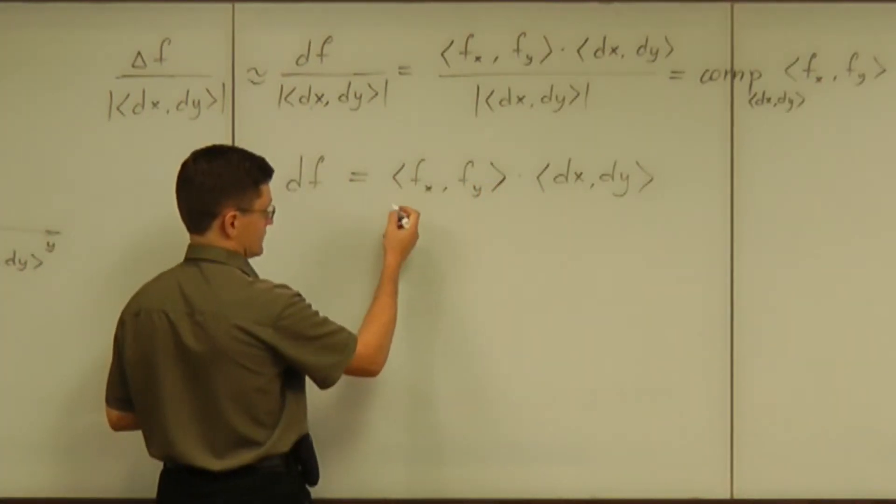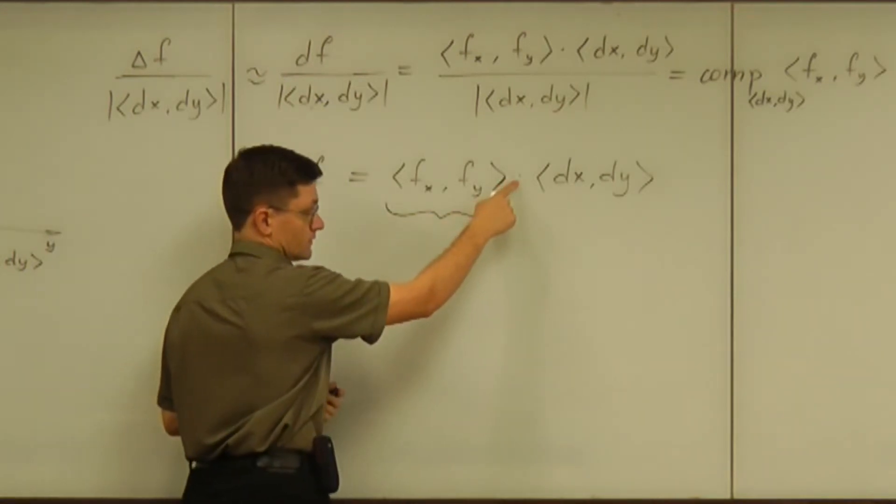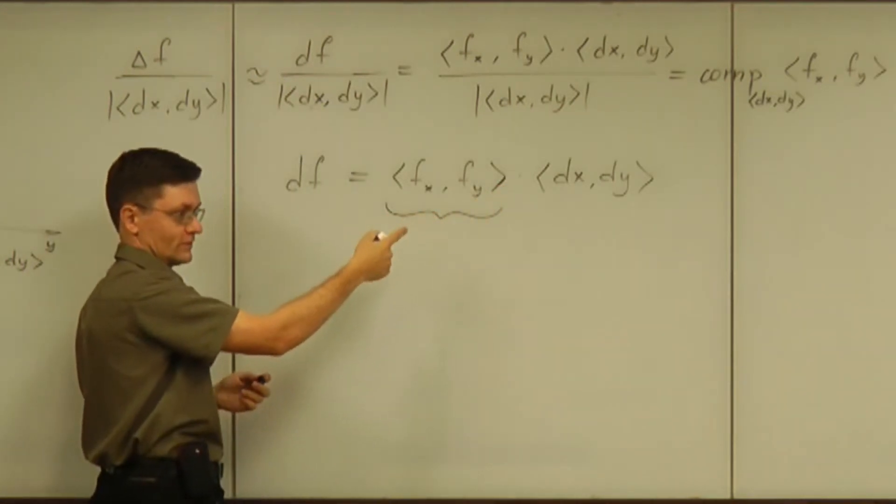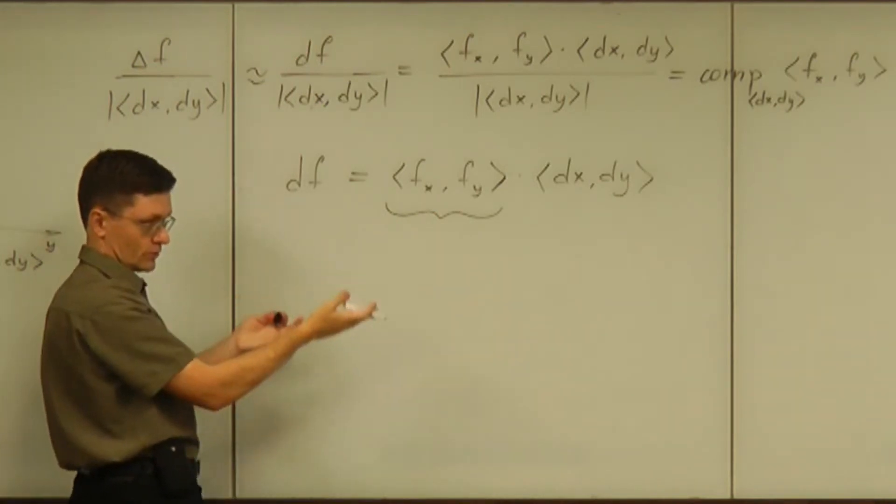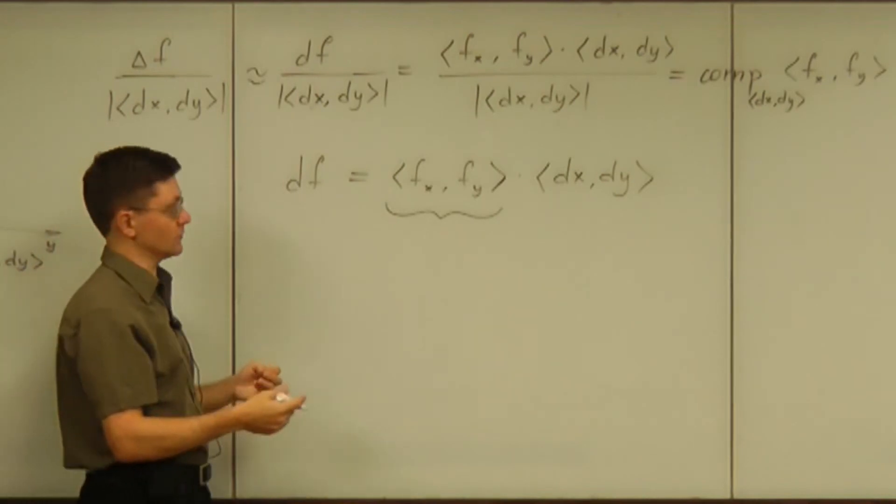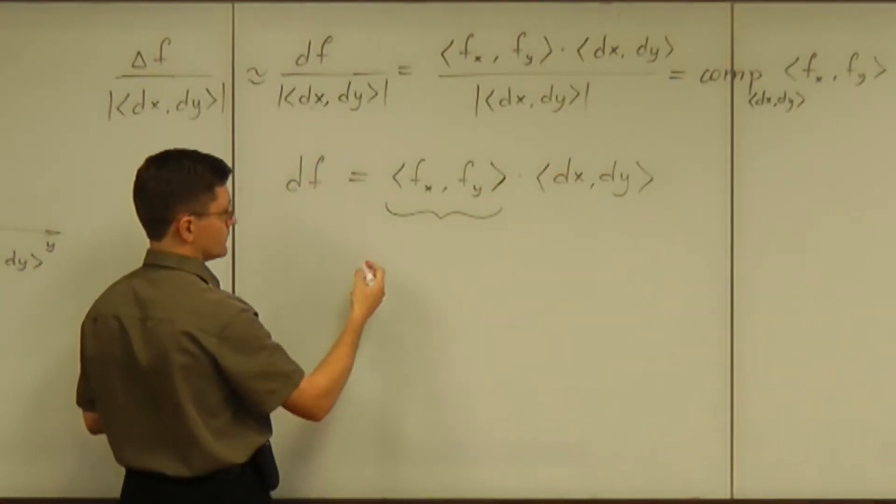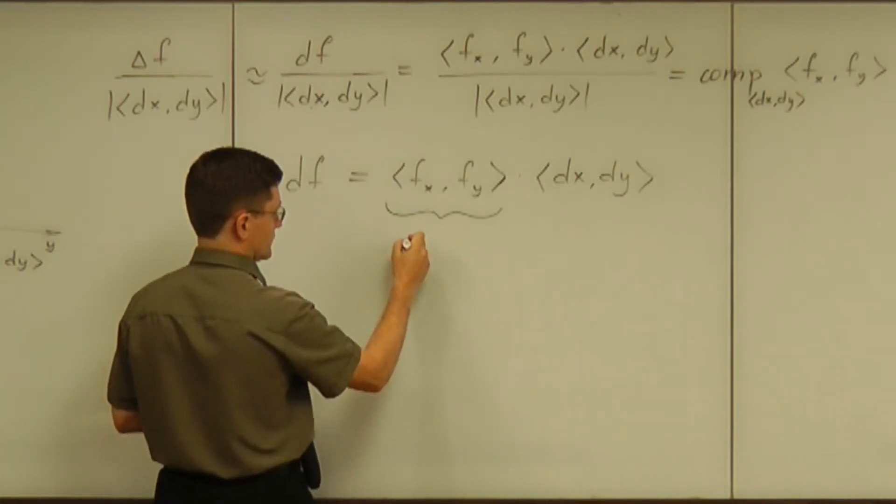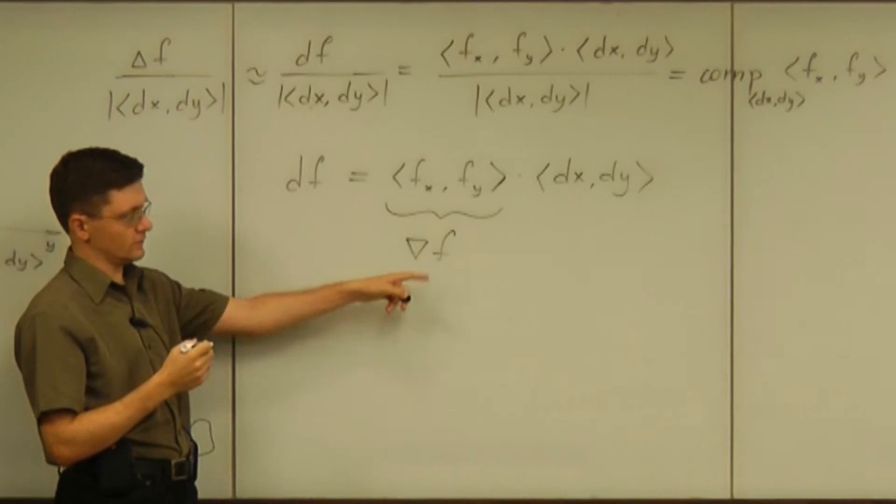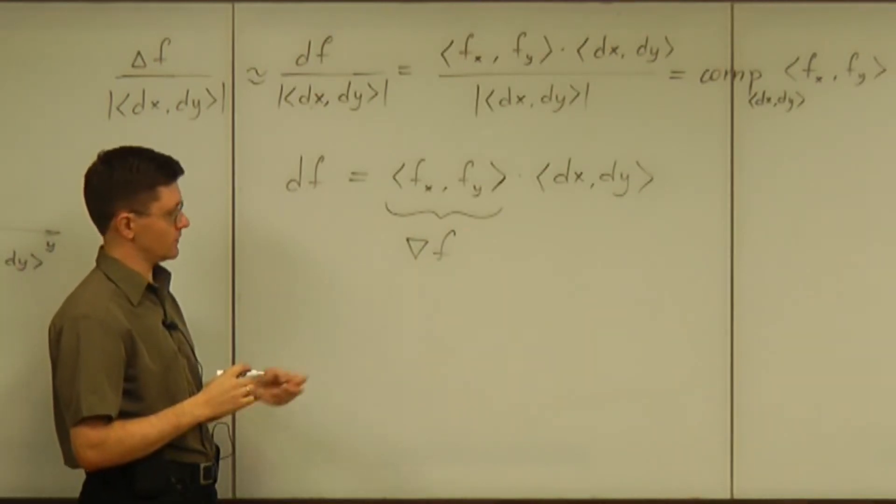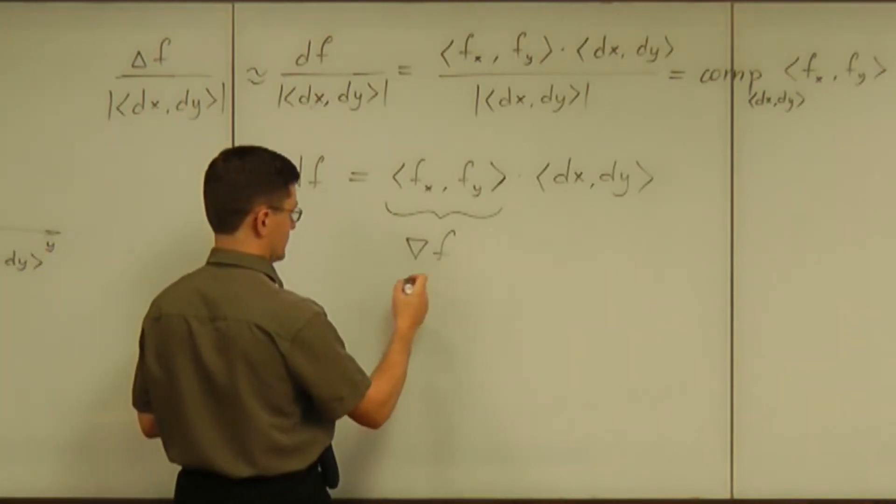So that hints us again that this vector, well notice that this multiplication is not multiplication of numbers, it's a dot product. But still we know it's a product so it makes sense to talk about the derivative multiplied by the change of the input. So that leads to new notation, just to recognize that that's an important concept: the nabla f or the gradient of f.